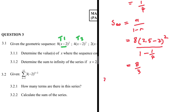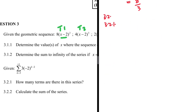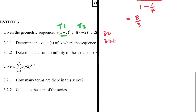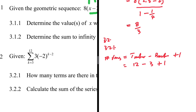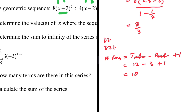For 3.2.1, we are given sigma notation and need to find how many terms are in the series. The number of terms equals the top number minus the bottom number plus 1. The top number is 12 and the bottom number is 3, so 12 minus 3 plus 1 equals 10. There are 10 terms in this series.